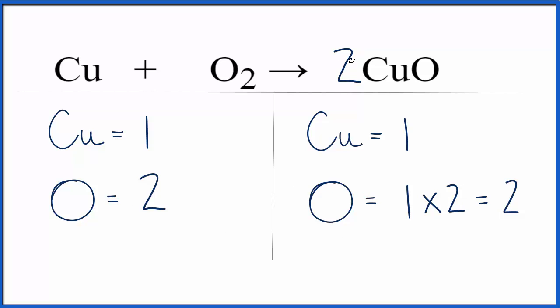However, the 2 applies to everything, this whole CuO compound here. So we have 1 times 2, and now we have 2 copper atoms.